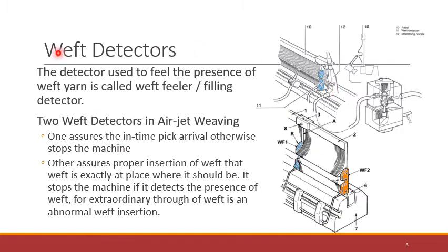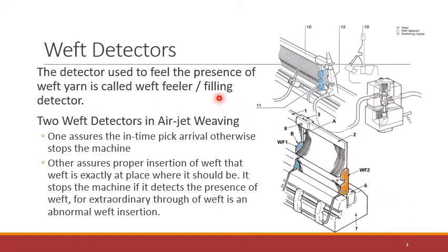We have weft protectors available on all types of weaving machines, especially when we talk about the air jet weaving machine. We use them to feel the presence of a weft that is being inserted — we want to see if the weft that is being inserted is perfectly inserted or not. For this we use weft detectors. We can name them weft detectors WD, or filling detectors FD, or weft feeler WF — like EWF. Some manufacturers call them weft detectors FD. So weft detectors are the devices used to confirm the proper insertion of the weft on the weaving machine.